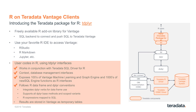TDPlyr follows R data frame and Dplyr conventions by using the Dplyr tibble function to create a virtual R data frame that points to a table or view in the New SQL engine. It integrates Dplyr verbs including select, rename, filter, mutate, transmute, arrange, group by, and summarize. Additionally, R expressions mapped to SQL fall into categories including math operators and functions, logical and comparison operators, conversion functions, character functions, aggregate functions, windowed functions, and bit functions. Results are stored in Vantage as temporary tables which are cleaned up when the session context is cleared.